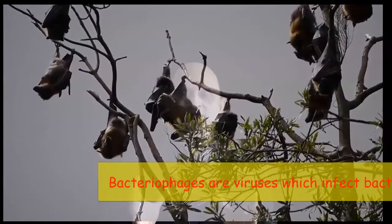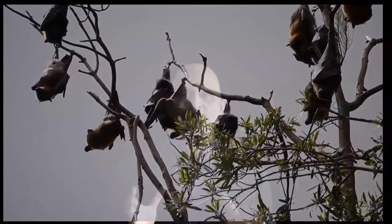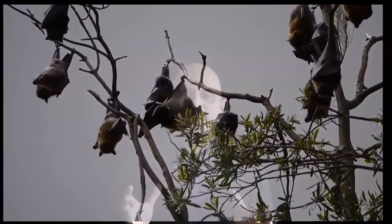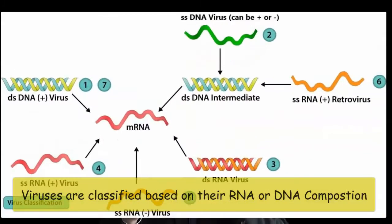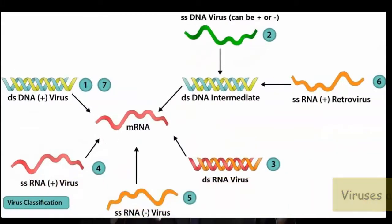For the purpose of this knowledge bite, we will be looking at viruses which infect human beings. Viruses are classified based on their nucleic acid composition. We can have either RNA viruses or DNA viruses. This classification scheme is known as the Baltimore scheme.